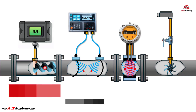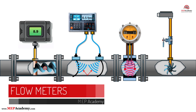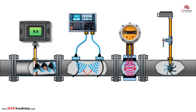In this video, we'll look at flow meters, exploring the different types used to measure liquids, gases, and steam. Whether you're working with water, steam, or natural gas, understanding the right flow meter for your application is critical for accuracy and efficiency. We'll show you how to calculate the flow based on the measured data.